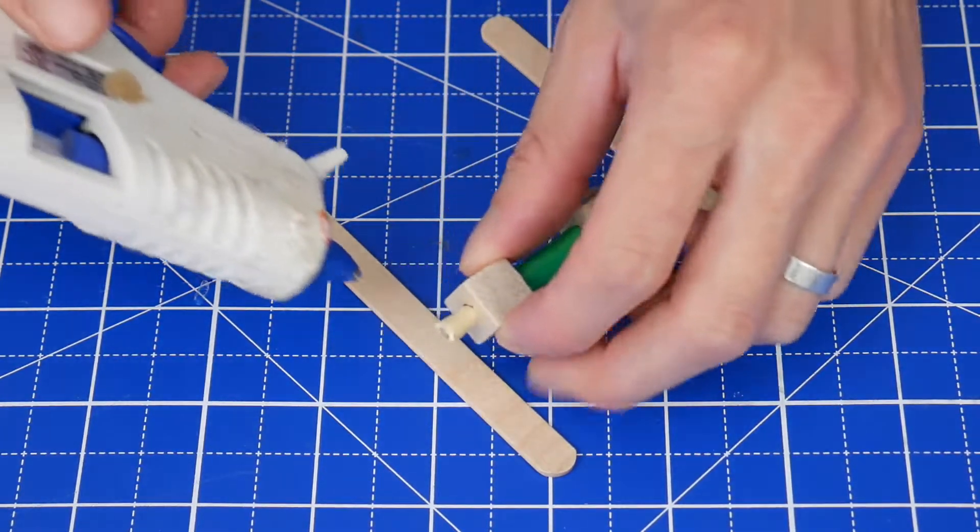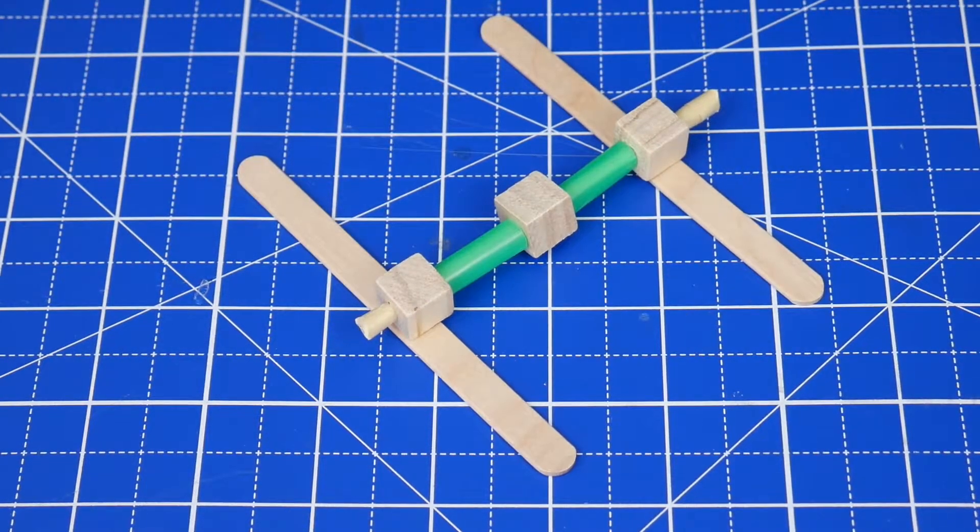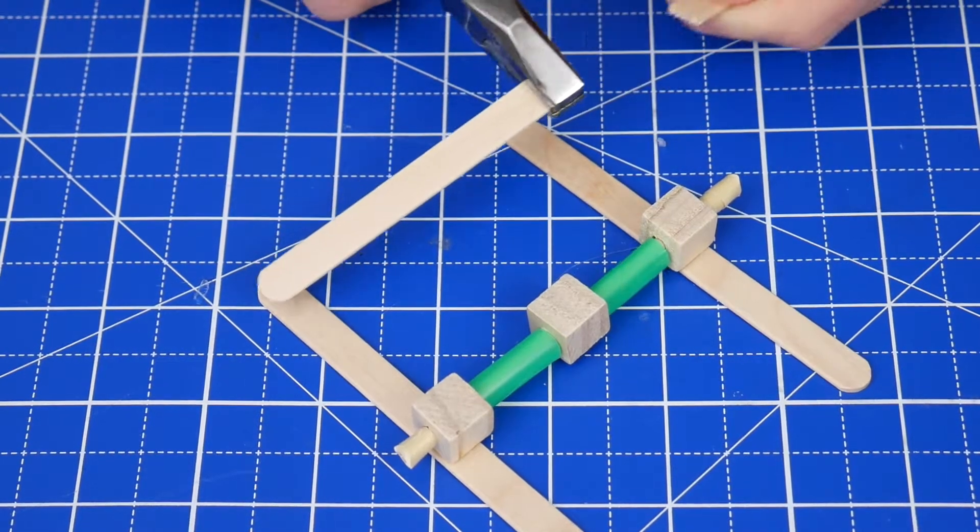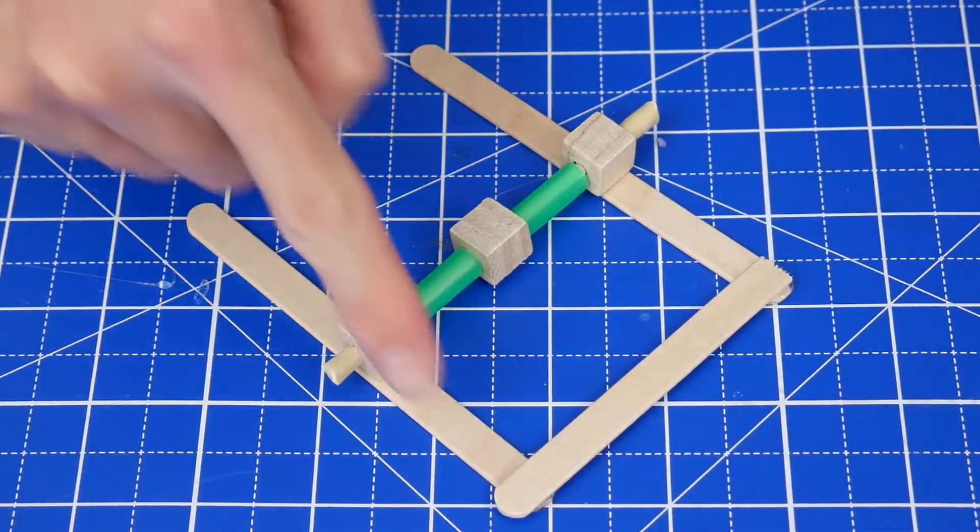Glue the two outermost cubes to the center of two craft sticks. Cut or break another craft stick to size, then glue this onto one side to create a U shape.